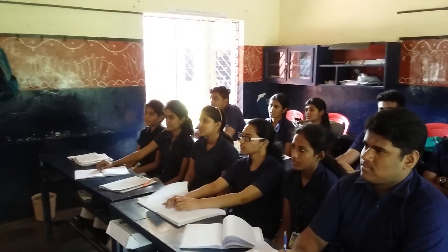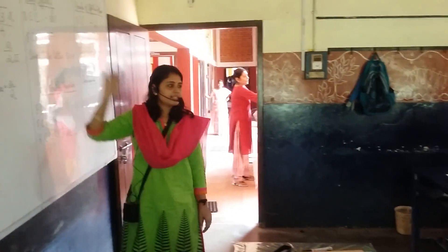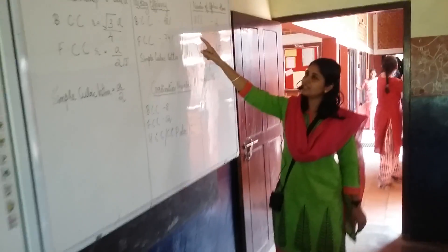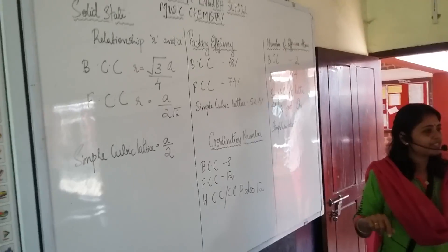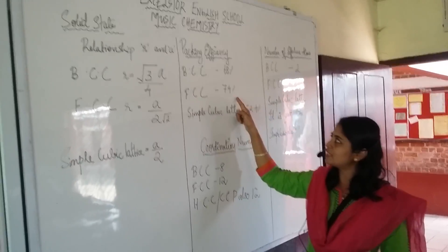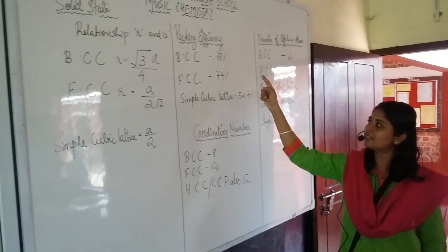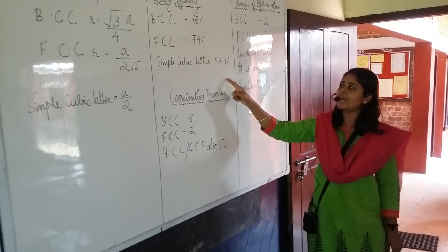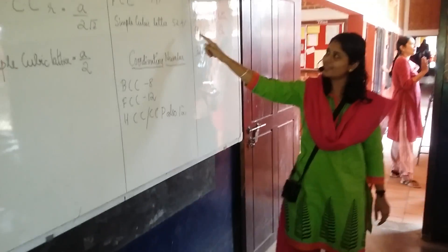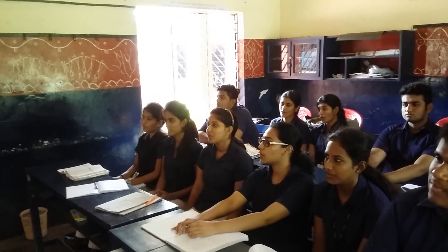Packing efficiency: BCC 68 percent, FCC 74 percent, simple cubic lattice 52.4 percent.